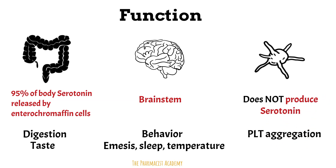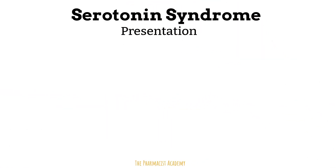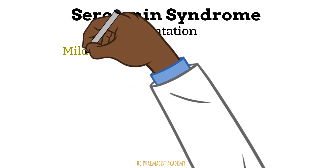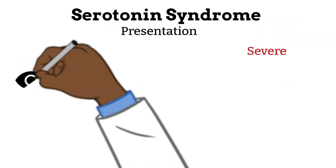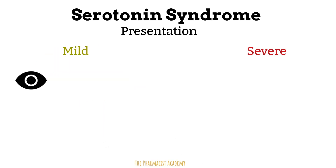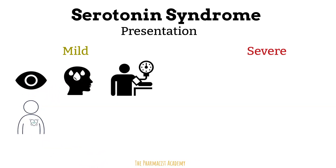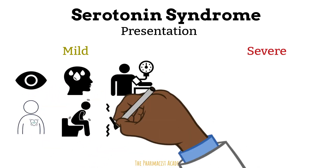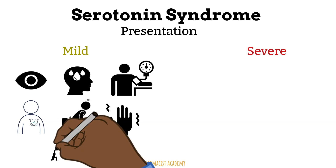Now we know what serotonin does in normal circumstances. When you have too much serotonin, as seen in serotonin syndrome, patients present with mild to severe symptoms. Mild symptoms include mydriasis (dilation of the pupil), diaphoresis (sweating), hypertension, tachycardia, diarrhea, and involuntary muscle movement. These patients are usually afebrile.